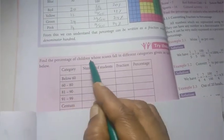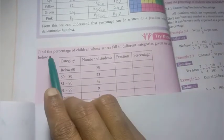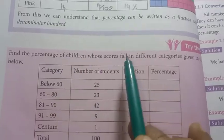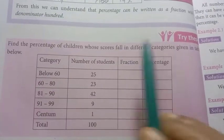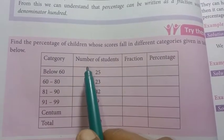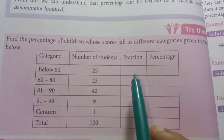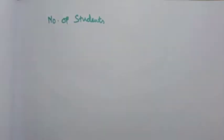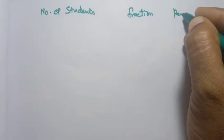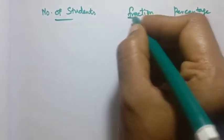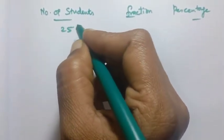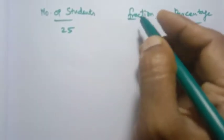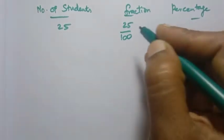Now, find the percentage of children whose scores fall in different categories given in the table. Category: below 60 — number of students: 25. So the fraction is 25 by 100, which gives 25 percentage.